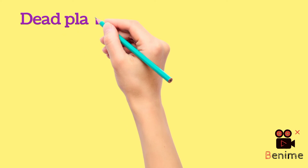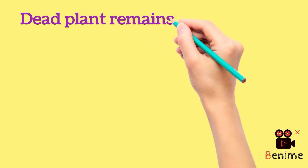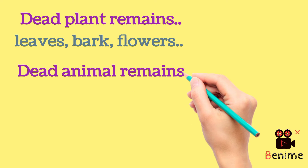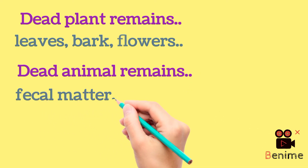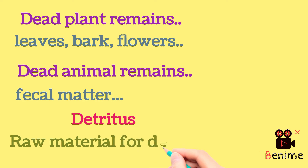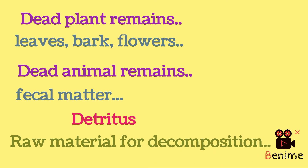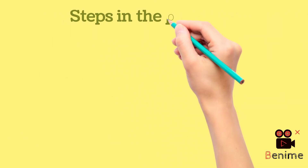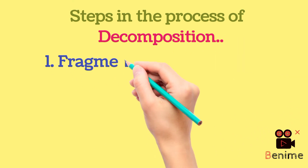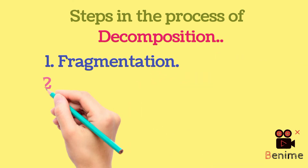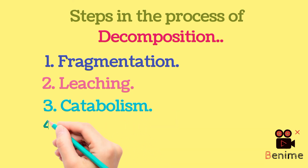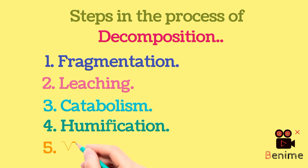Dead plant remains such as leaves, bark, flowers, and dead remains of animals including fecal matter constitute detritus, which is the raw material for decomposition. The important steps in the process of decomposition are fragmentation, leaching, catabolism, humification, and mineralization.